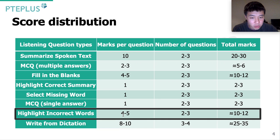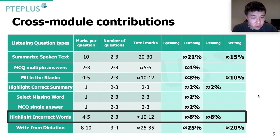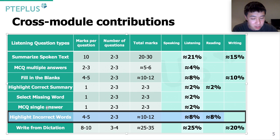Now let's have a look at the score contribution. You're going to be facing 2 to 3 questions of HIW in the exam, and each will potentially give you 4 to 5 marks — so that's about 10 to 12 marks in total. It will be contributing about 8% to your listening and reading. Even though it is not much compared to SST and WFD, which are 21% and 25% each accordingly, it's still significant.